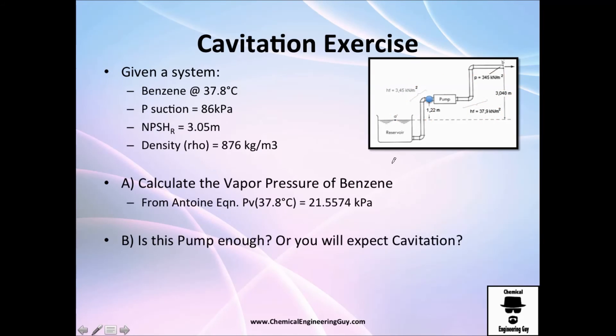For this case, vapor pressure of benzene, we will use the Antoine equation, which is essentially the logarithm of the vapor pressure. You need to find the constant A, B, the temperature at which we are operating, and C. Once you find A, B, and C, plug this temperature here and solve for the vapor pressure, and I found out this value. You don't need to actually calculate it. You can go to an internet calculator of vapor pressures or to the databases and find this out.